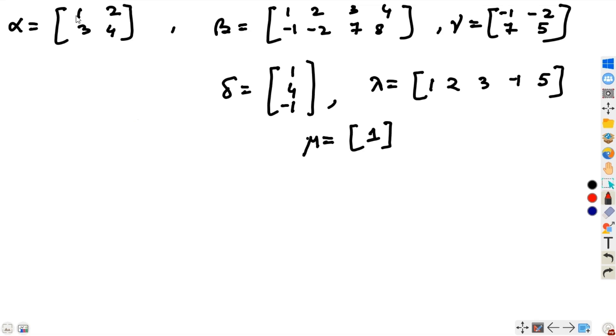So the question here is, you have to determine the size of each of this matrix. What is the size of alpha? There are two rows, there are two columns. Therefore, it is a 2 by 2 matrix. What is the size of beta? There are two rows and how many columns? There are four columns. Therefore, it is a 2 by 4 matrix. What is the size of gamma? Two rows, two columns. Therefore, 2 by 2. Size of delta? It is 3 by 1 because three rows and one column. Size of lambda? It is 1 by 5 because there is one row. One, two, three, four, five. There are five columns. And mu is simply a number, but therefore, only one row and one column. So it is a 1 by 1 matrix.